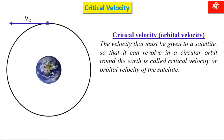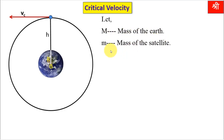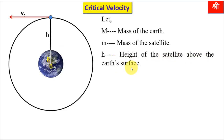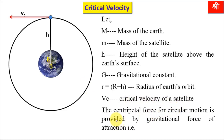Now we have to derive the expression for critical velocity. Suppose that satellite is revolving around the Earth in a circular orbit at a height h from the surface of the Earth, as shown in this figure. Let capital M be the mass of the Earth, small m be the mass of the satellite, h is the height of the satellite above the Earth's surface, G is the gravitational constant, and small r equals capital R plus h, which is the radius of the orbit.